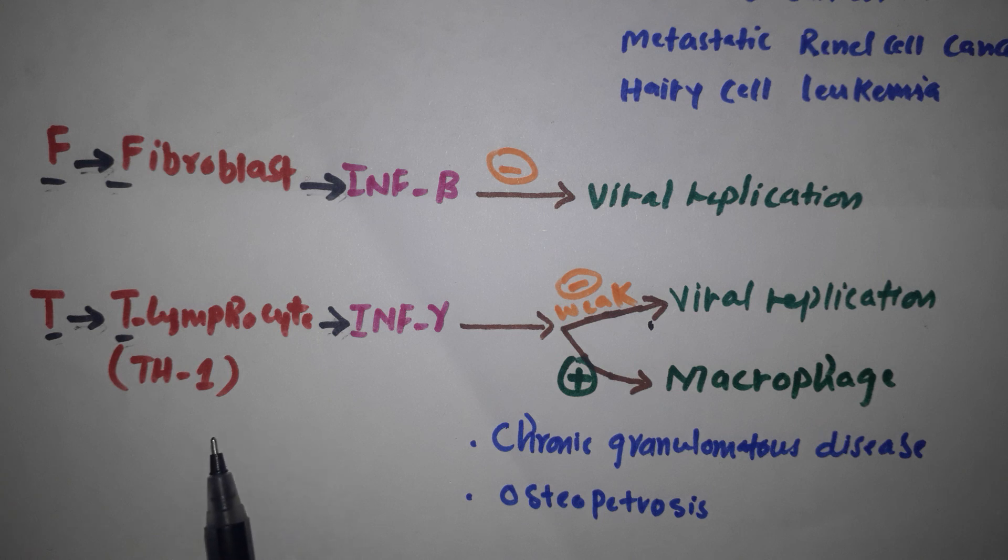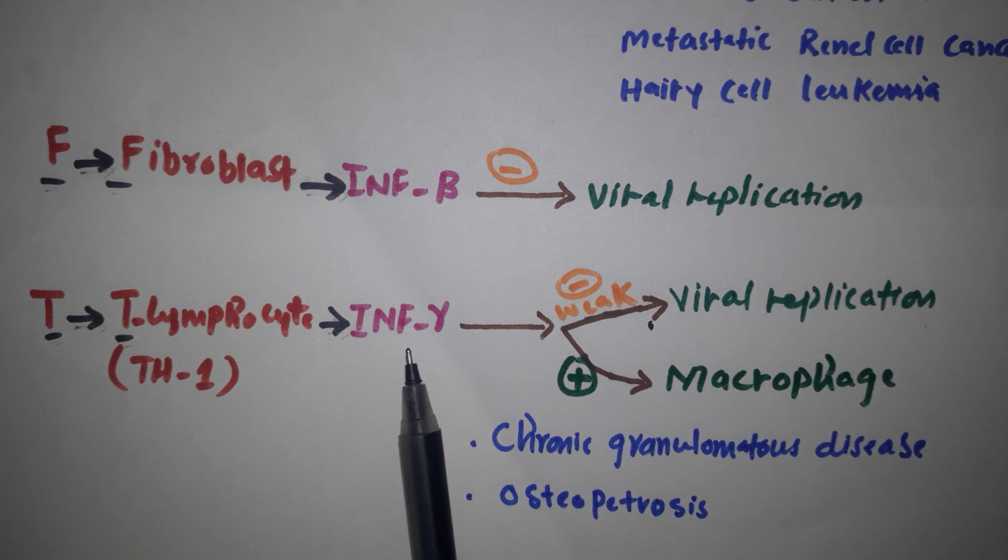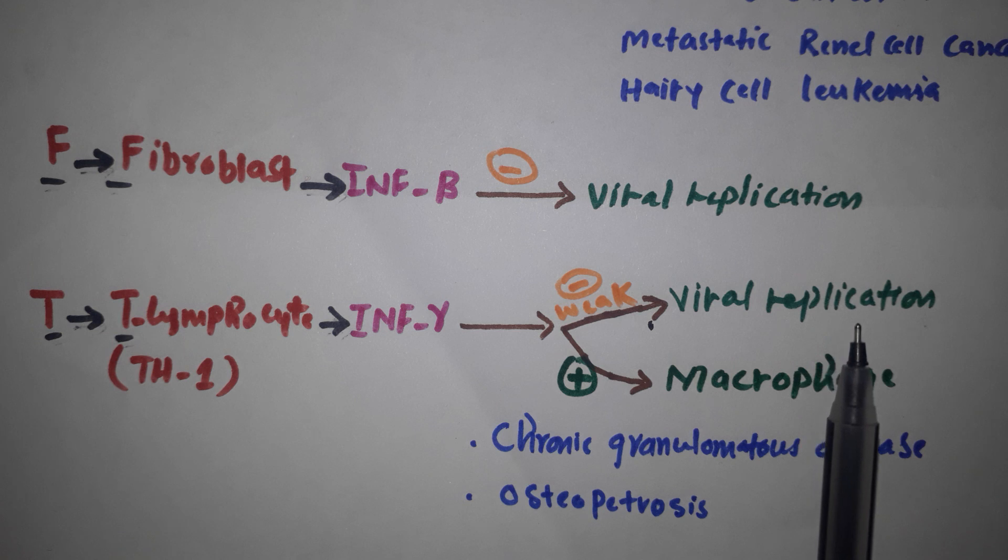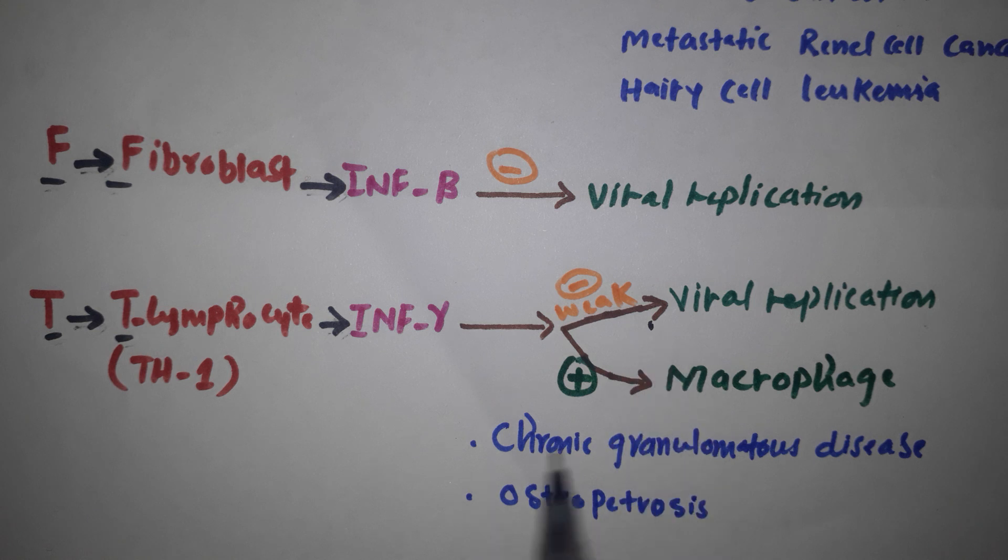T is for T lymphocytes, more specifically T helper 1. T helper 1 secretes interferon gamma. What are the functions of interferon gamma? It is weakly antiviral and inhibits viral replication, but that's very weak and not the main function.